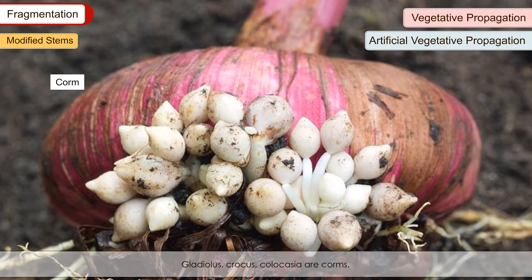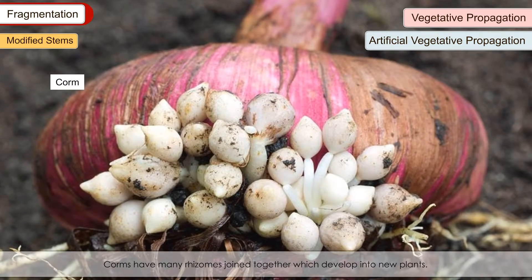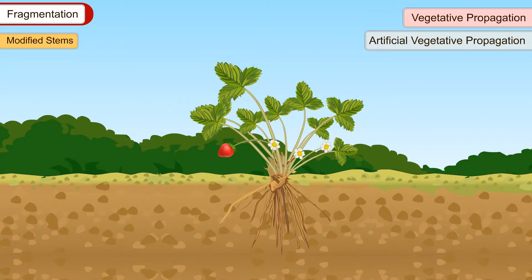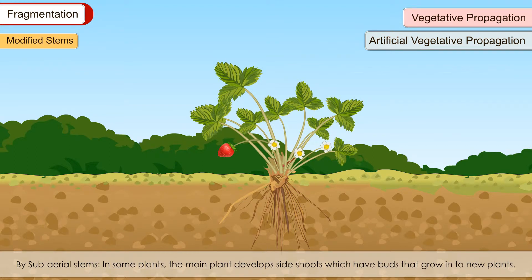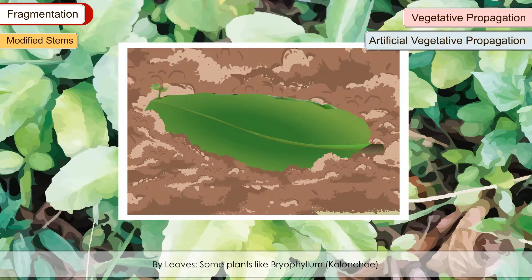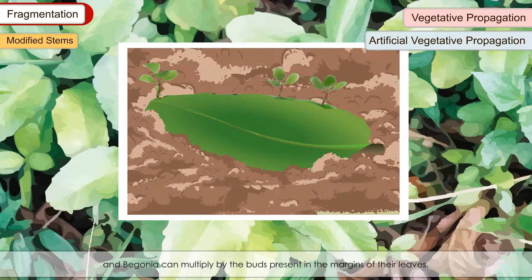Corm: Gladiolus, crocus and colocasia are corms. Corms have many rhizomes joined together which develop into new plants. By sub-aerial stems: In some plants, the main plant develops side shoots with buds that grow into new plants — for example, strawberry, mint and grasses — which grow horizontally on the soil surface or just below it. By leaves: Some plants like Bryophyllum and Begonia can multiply by the buds present in the margins of their leaves. These buds fall on the ground and grow into new plants.